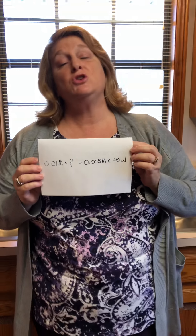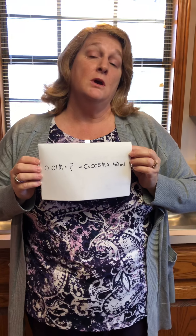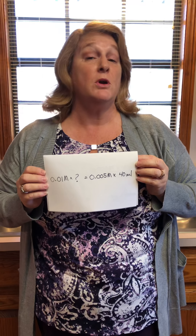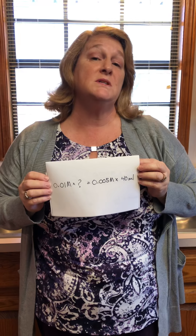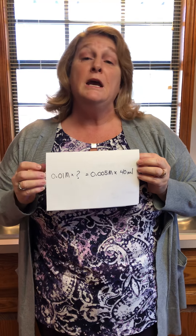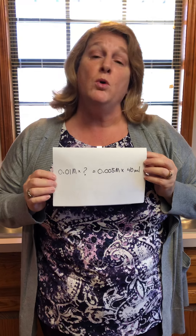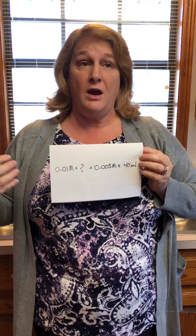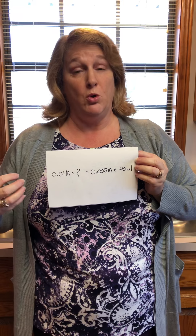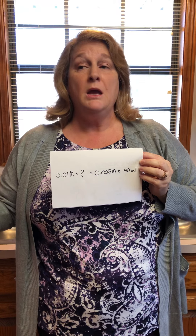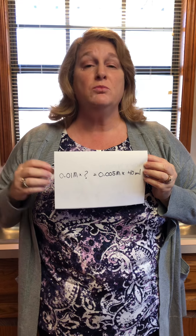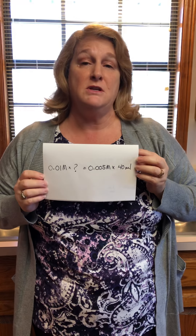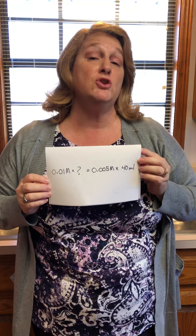Before we go any further, let's make sure that we know what a mole is. A mole is a number — the simplest way to describe it is a number. It's Avogadro's number, which is 6.02 times 10 to the 23rd. Molarity is the percentage of a mole in a liter of solution — so we can have half a mole, a whole mole, or two moles. You can look up molarity to make sure you know what it is.